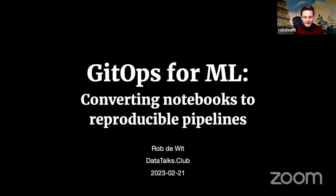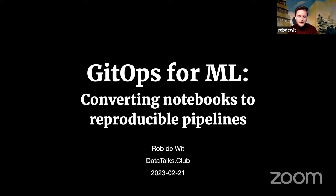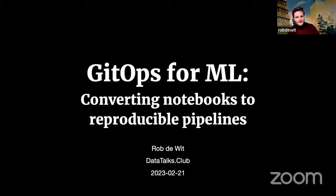Thanks for having me, and thanks everyone for joining. Today I'll be talking about GitOps for ML — going from a notebook to a reproducible pipeline, as you've probably read in the description. We'll be doing so using DVC, which is an open source library that stands for data version control, but as we'll see shortly, it does a lot more than that. Let's dive right in. I'll first give a short introduction to DVC, then we'll go through the workshop together. The first part will cover converting a notebook to a DVC pipeline, and if we have time, we'll look at taking model training online with CML, which is CI/CD for machine learning.